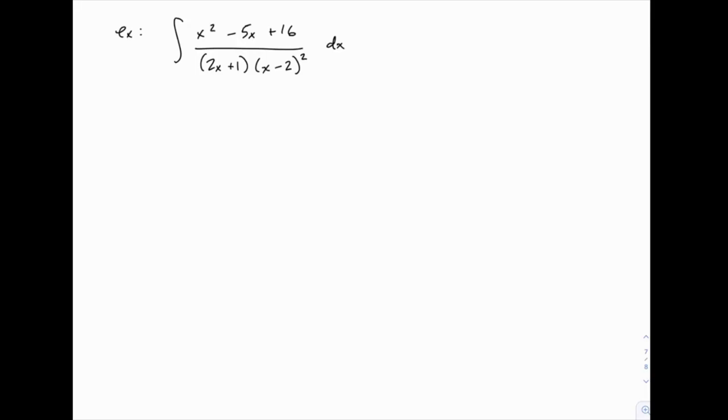Here's another example of partial fraction decomposition. We're going to integrate x squared minus 5x plus 16 over 2x plus 1 times x minus 2 squared, and we'll do so by breaking this down into partial fractions. Normally we would start by factoring the denominator, but this one's already factored for us, so things are a little bit easier. We get to skip the first step and jump straight to setting up the partial fractions.